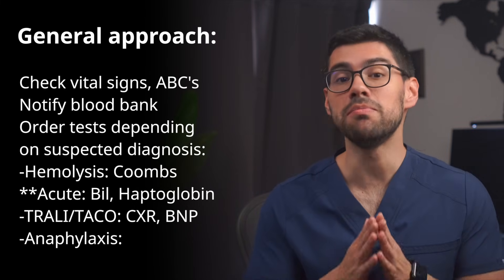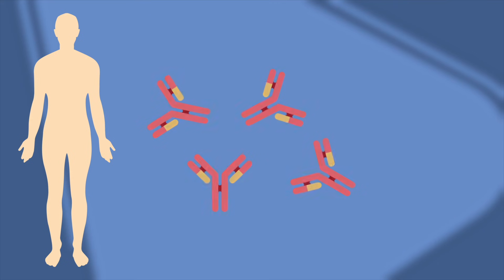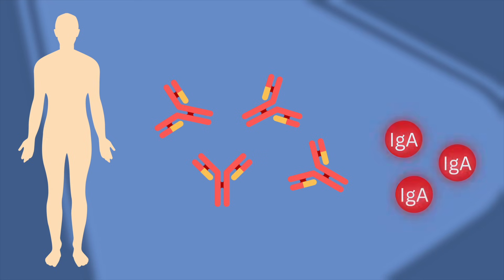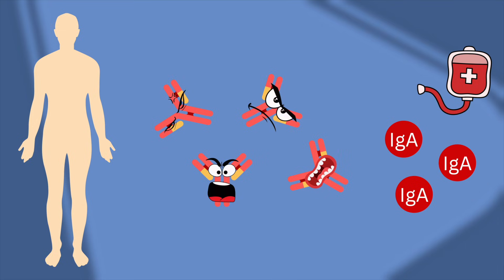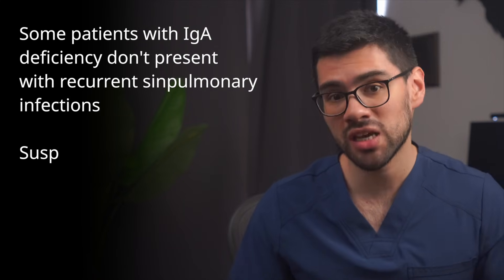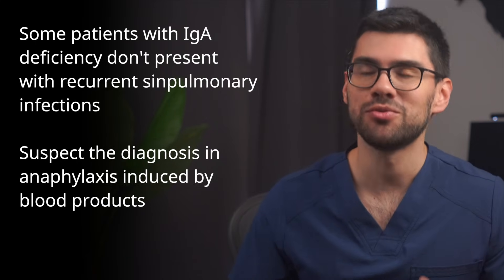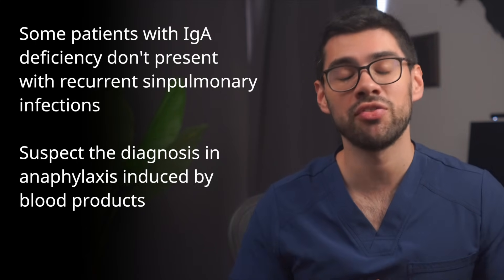Think it's anaphylaxis? Do the immediate treatment first, and then rule out an IgA deficiency. In IgA deficiency, patients develop antibodies against IgA since they don't have that antigen. When they receive products that contain IgA, as happens with blood transfusions, their immune system treats the IgA molecules as foreign antigens — because they are — and that triggers anaphylaxis. This is very important to keep in mind because some patients with IgA deficiency don't present with the typical immunodeficiency picture; sometimes their presentation is literally just anaphylaxis induced by blood products. The boards really love to test this concept, so make sure you understand it fully.